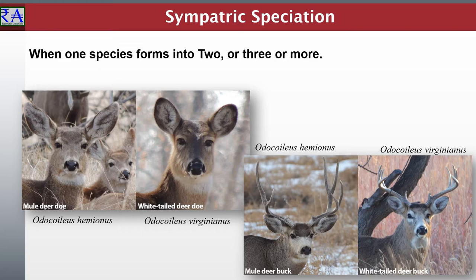White-tailed deer, Odocoileus virginianus, is the native deer species on this continent. Through time and geographic habitat differences, sympatric speciation has given rise to mule deer, Odocoileus hemionus, to fill niche opportunities in higher elevation mountainous regions, steeper river basin habitats, and specialized feeding characteristics common to these lands.